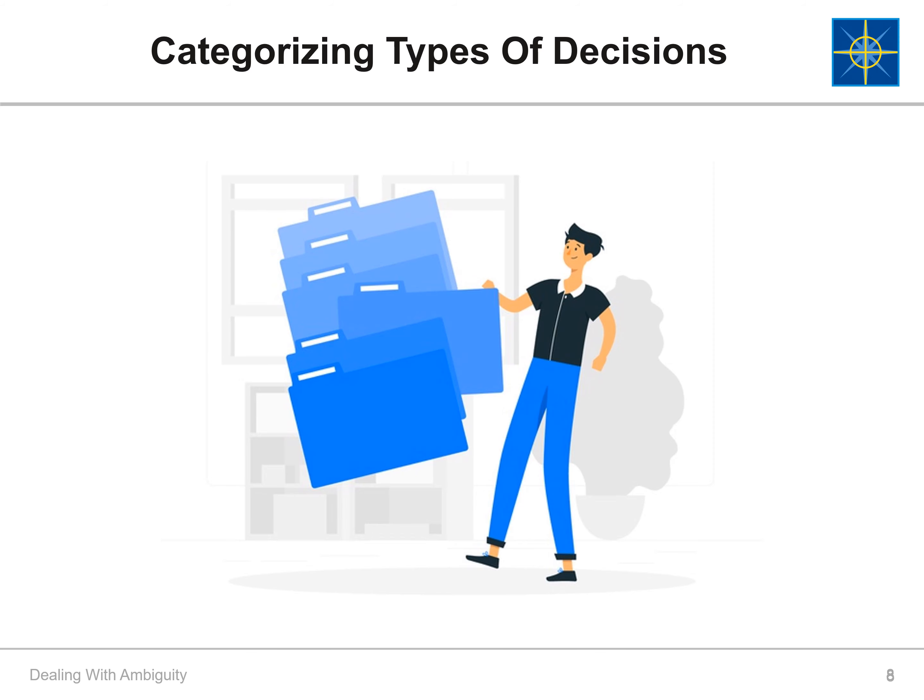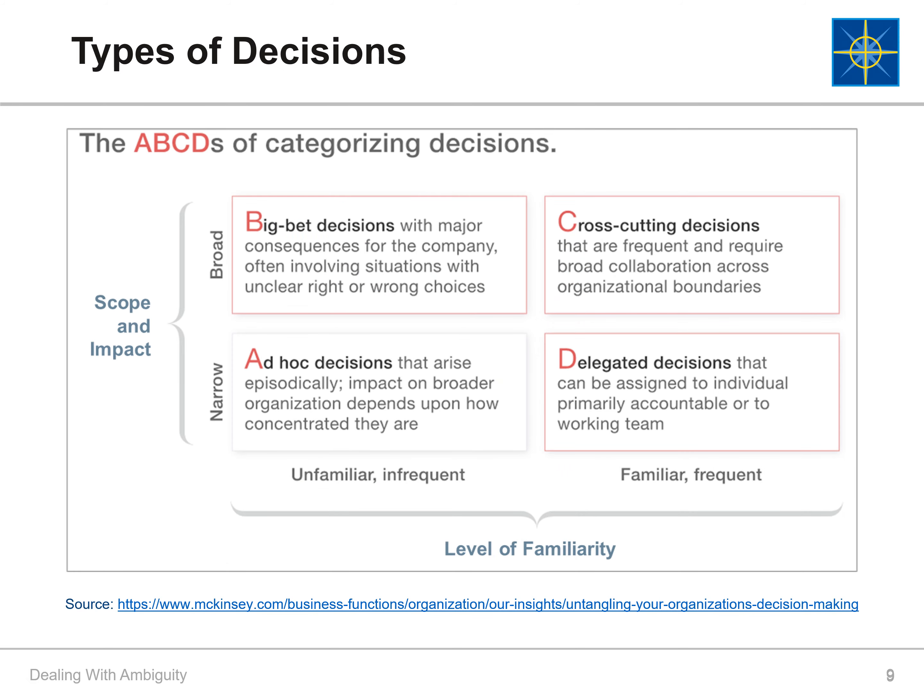Now that we know what decisiveness is and why it is important, how can we categorize various types of decisions? Let's look at four types of decisions using two axes: scope and impact, and level of familiarity. Scope can be narrow or broad. Level of familiarity is unfamiliar and infrequent, or familiar and frequent. Using that matrix, the four types of decisions are ad hoc, big bet, crosscutting, and delegated.